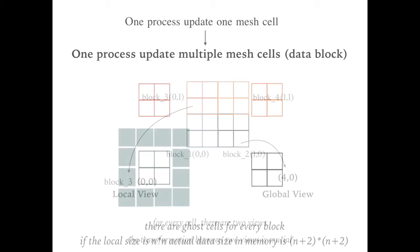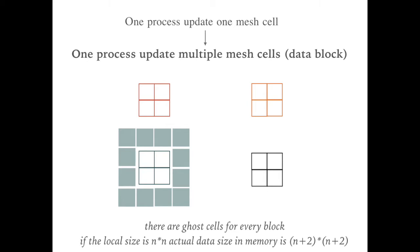Another thing is about the ghost value. For every data block, we still need to provide the ghost area around this data block. The ghost value will be updated by their neighbor blocks. If the local size of mesh is n times n for one data block, the actual data size will be n plus 2 times n plus 2. We also need to provide the space for the ghost area.